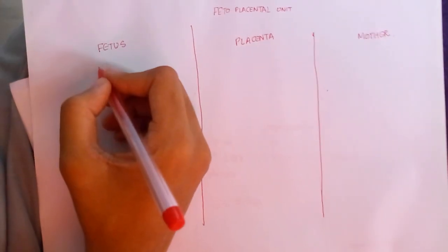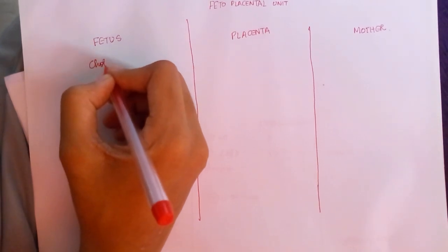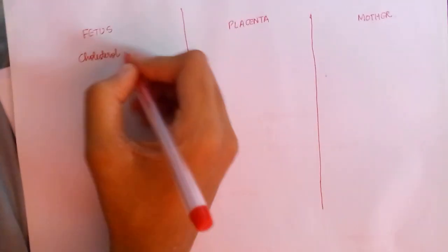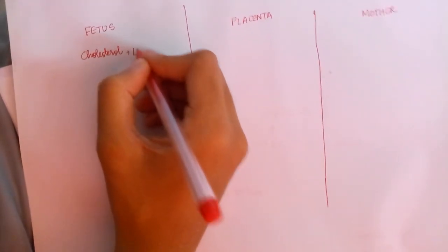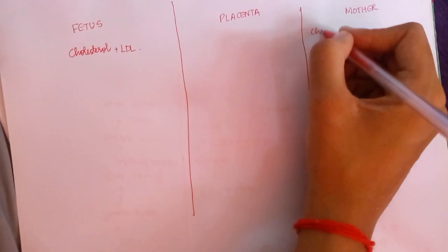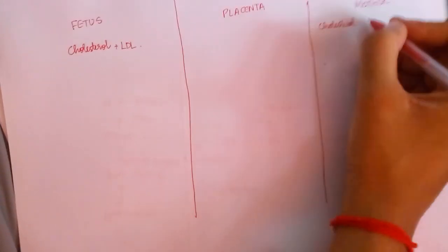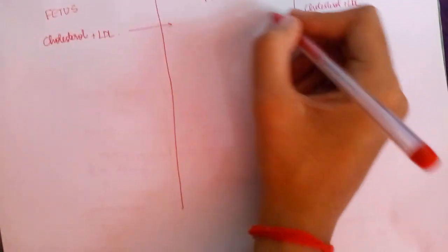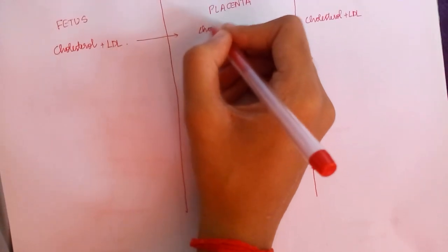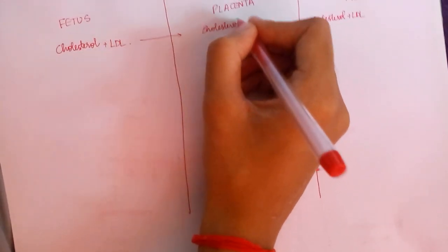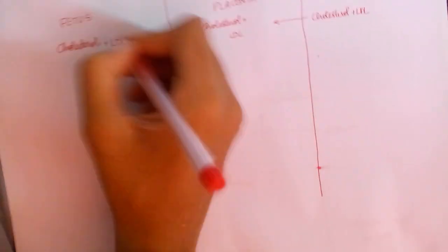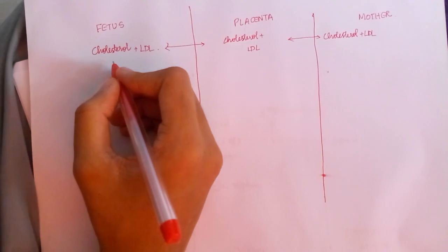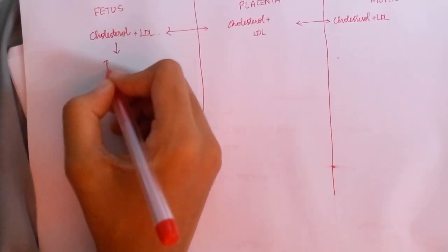The basic substrate for any steroidal hormone is cholesterol. This is available in the mother and can be easily transported through the placenta. Cholesterol plus LDL forms the substrate for the formation of pregnenolone.